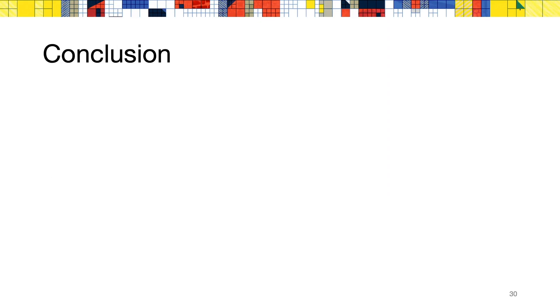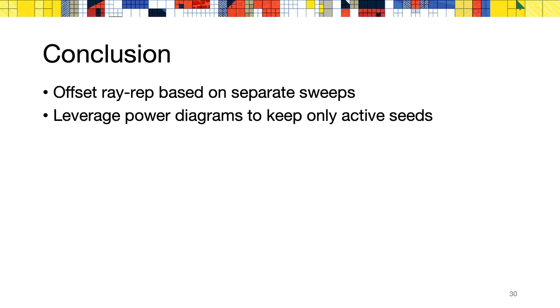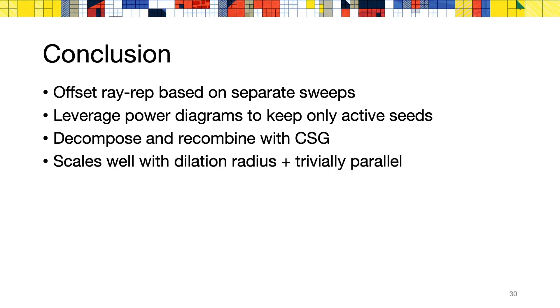In conclusion, our method computes an offset of a dexel data structure via multiple sweeps. We leverage the power diagram of the input segments to compute the dilation rays on the fly. We decompose each offset operation into more elementary steps for simplicity. Our final algorithm scales well with the dilation radius and is trivially parallel. And finally, it can readily be applied to 3D voxel grid inputs as an added bonus.